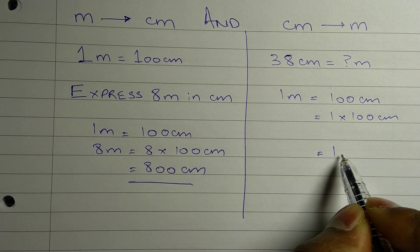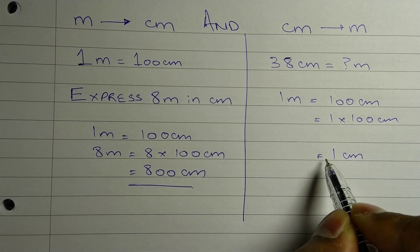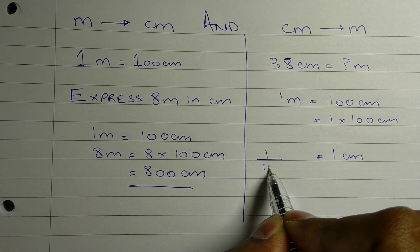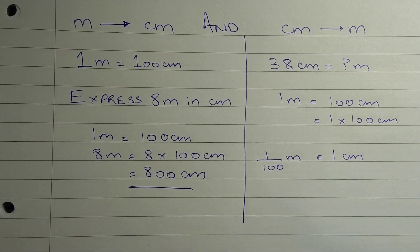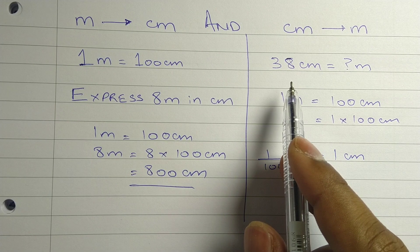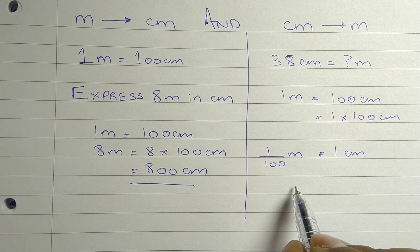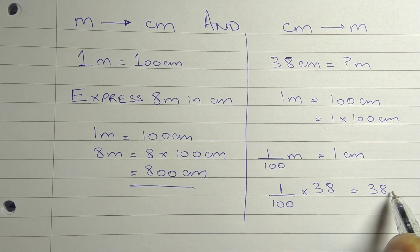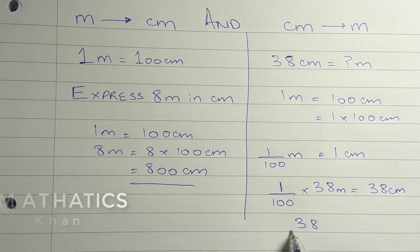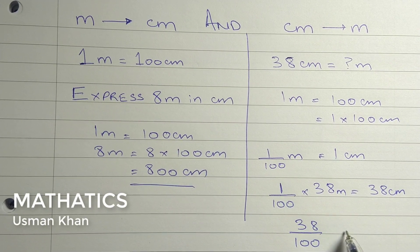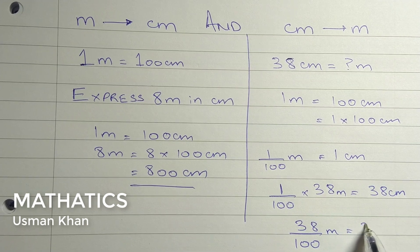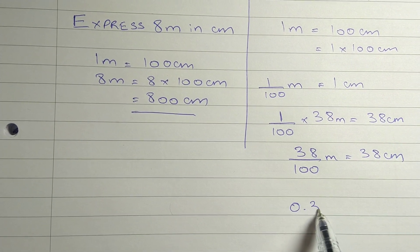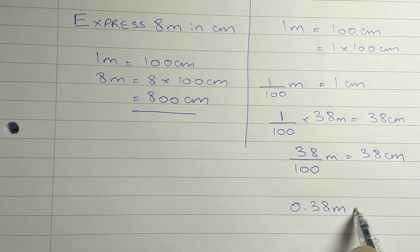So one centimeter will equal 1/100 meter. Now to calculate 38 centimeters, we multiply 38 by 1/100. We get 38/100 meters, which equals 0.38 meters.